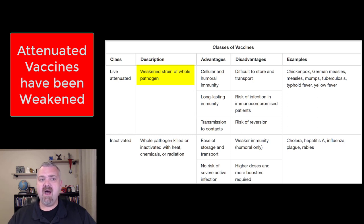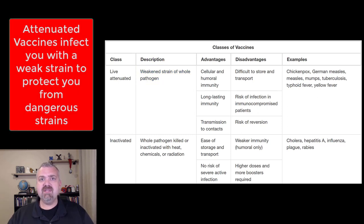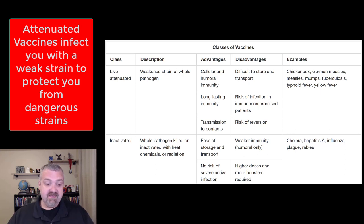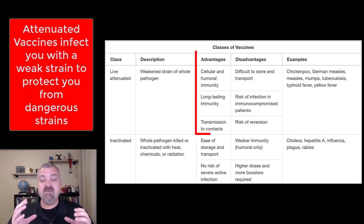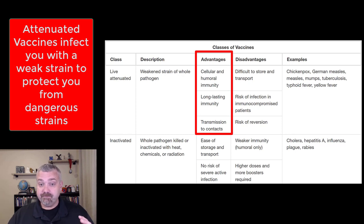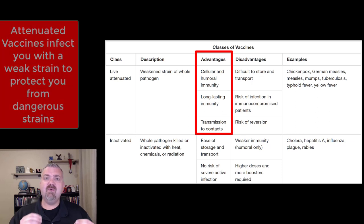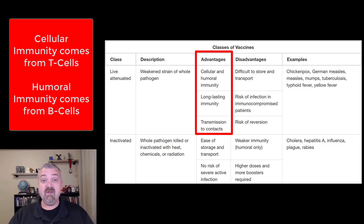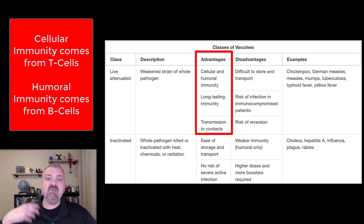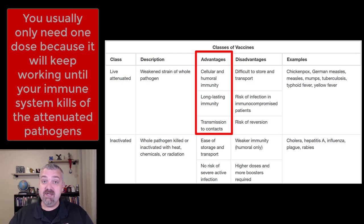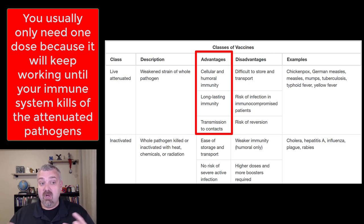Let's talk about the pros and cons. Number one, it more closely mimics an actual infection because you really are being infected — just with a weaker version of the organism. The organisms are alive when they go in, and they stay alive while your body mounts an immune defense, which can take 10 to 14 days. So you get a more lifelong immunity. It confers both cellular and humoral immunity, meaning your T cells and B cells are made aware of the organism. You only need one dose and get longer lasting immunity.